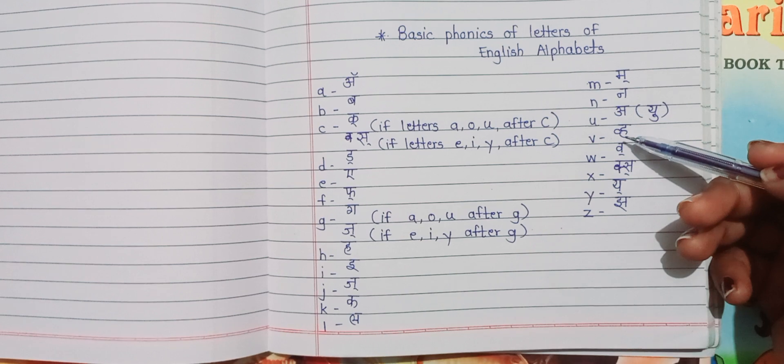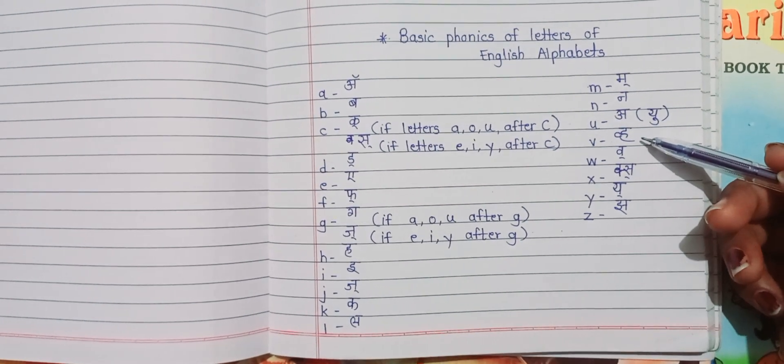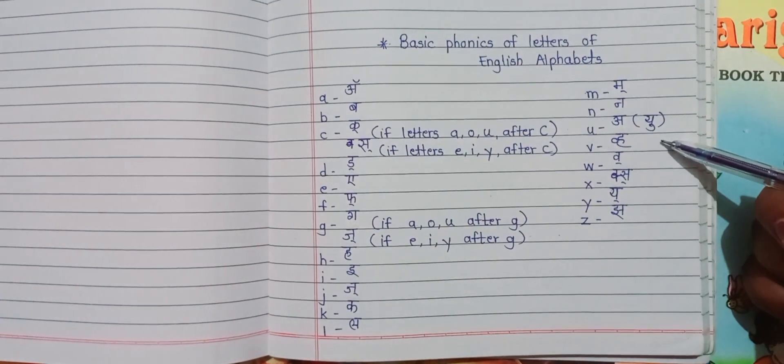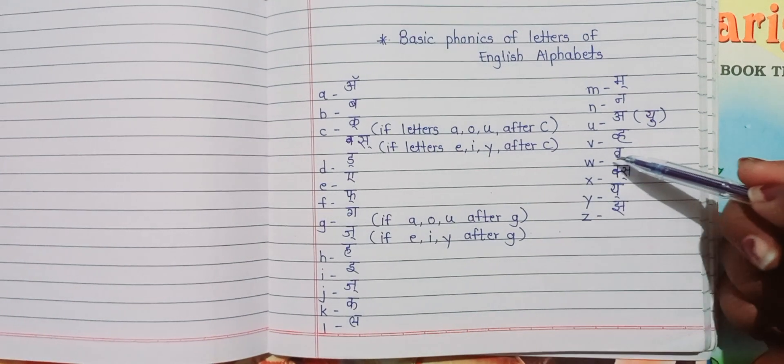V says V, like the words vulture, violin, vase. W says W,